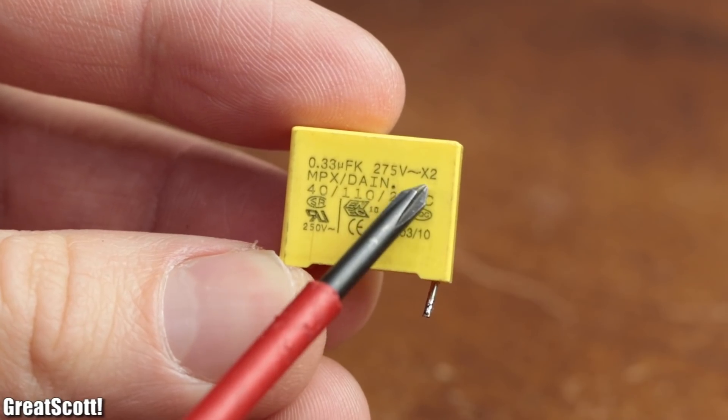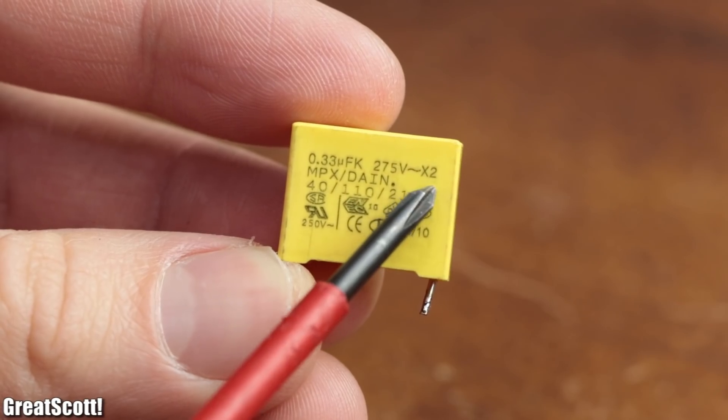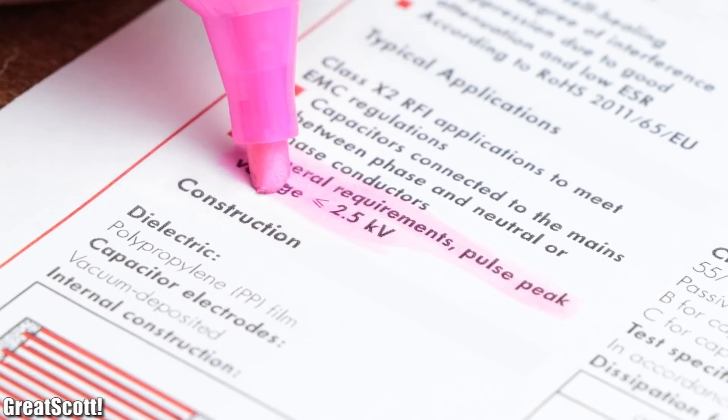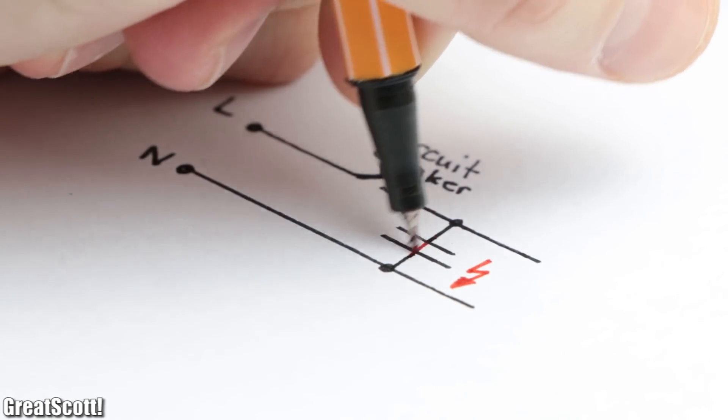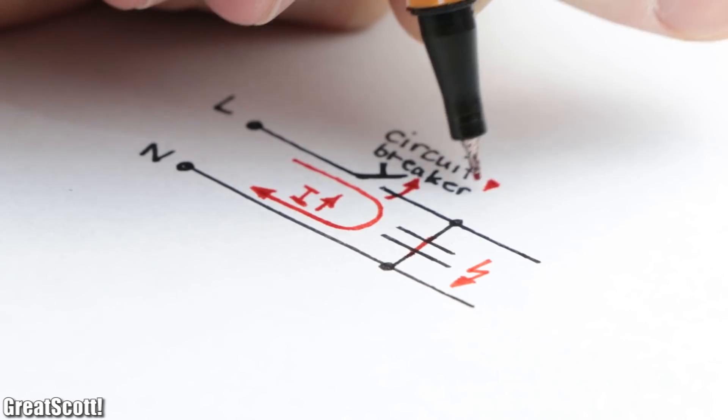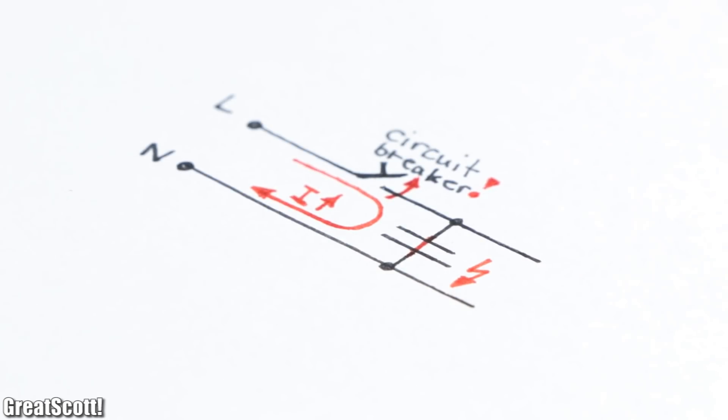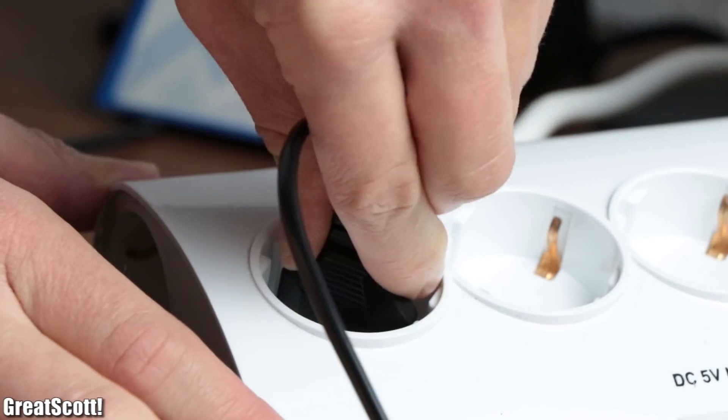Usually here you would use so called X2 safety capacitors for such a circuit since they can handle such impulses as well and also tend to fail as a short, so that the protection devices of your house wiring can interrupt the current flow. But nevertheless, after building up the circuit and hooking it up to mains voltage...